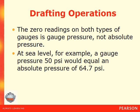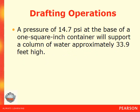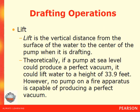At sea level, a gauge pressure of 50 psi equals an absolute pressure of 64.7 psi. Readings below zero on the compound gauge are measured in inches of mercury. One inch of mercury equals an absolute pressure of 0.49 psi, and atmospheric pressure of 14.7 psi equals 29.92 inches of mercury. A pressure of 14.7 psi at the base of a one-square-inch container will support a column of water approximately 33.9 feet high. Lift is the vertical distance from the surface of the water to the center of the pump when drafting. Theoretically, if a pump at sea level could produce a perfect vacuum, it could lift water to a height of 33.9 feet. However, no pump on a fire apparatus is capable of producing a perfect vacuum — if a pump is in excellent condition drafting at sea level, it should be capable of obtaining a lift of 25 feet.